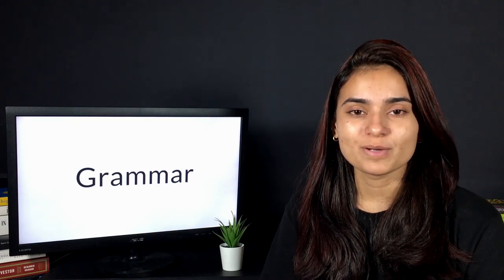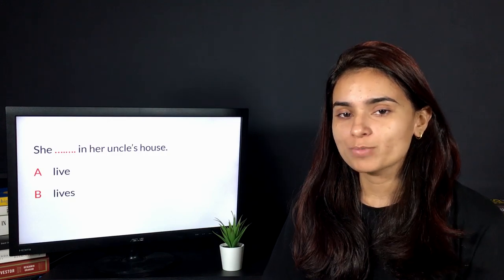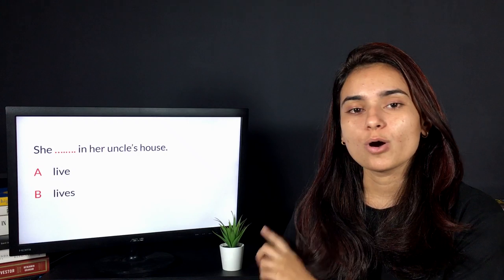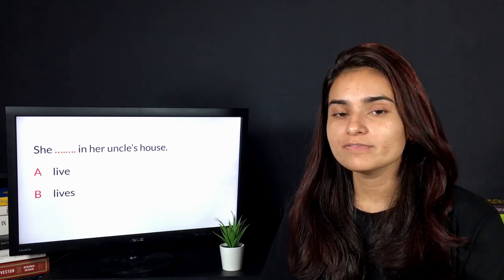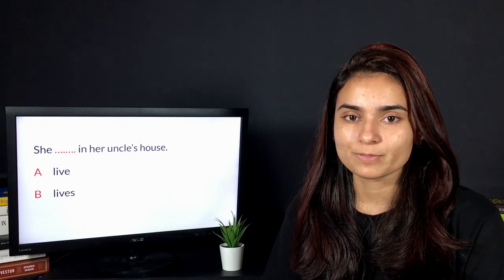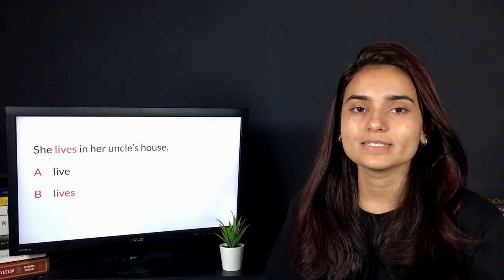Let's start from question number one: She dash in her uncle's house. There are two options: option A is live, option B is lives. Try to find out the answer and think about the concept that you might have applied to get this answer. The correct answer is 'she lives in her uncle's house.'